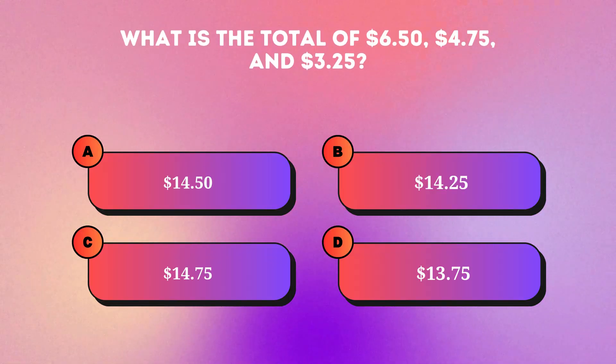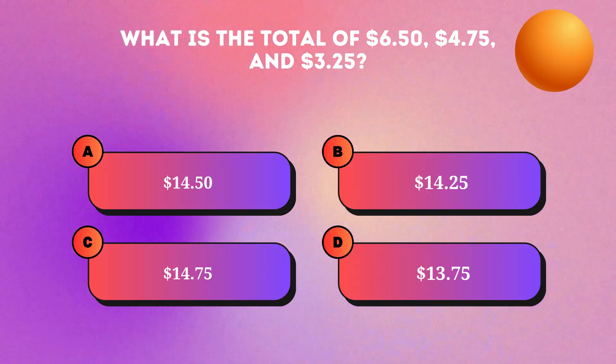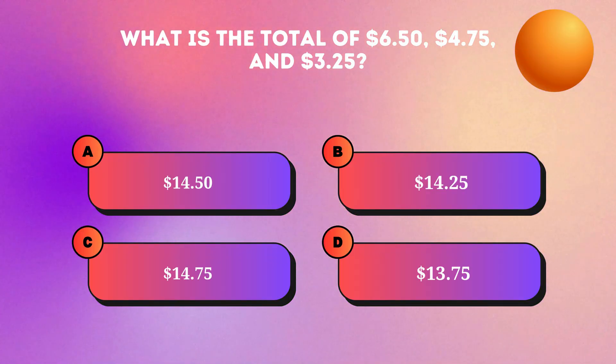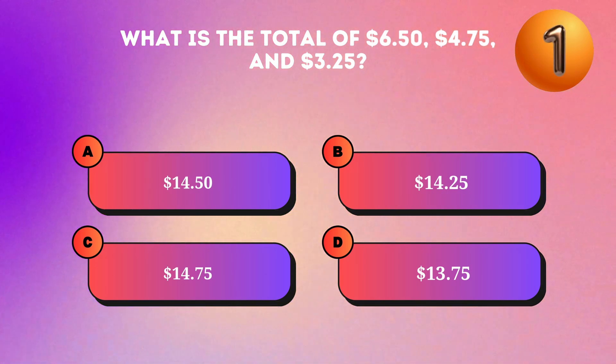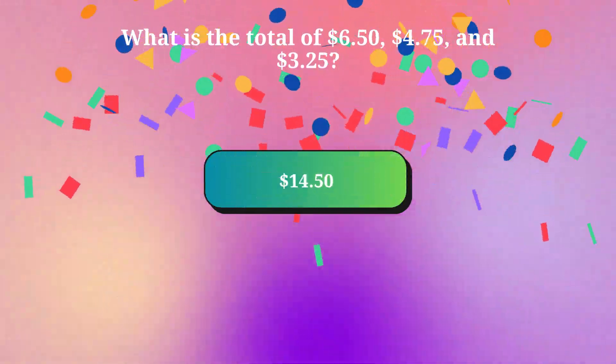What is the total of six dollars fifty cents, four dollars seventy-five cents, and three dollars twenty-five cents? Fourteen dollars fifty cents.